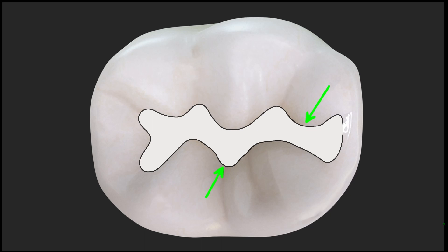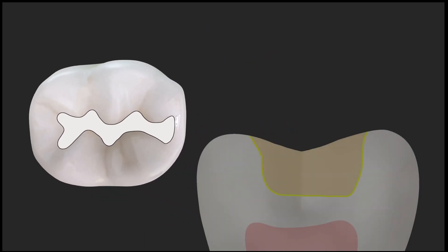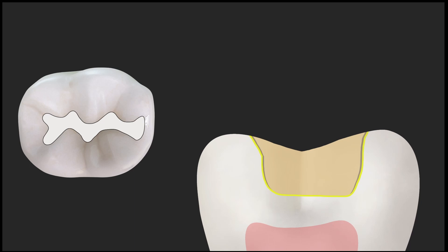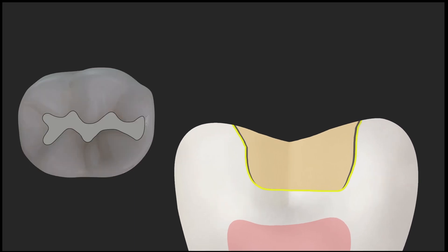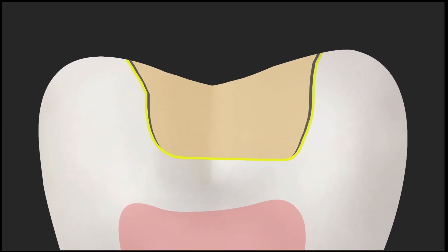In a cross-sectional view, we can see that there will be a gap formation between the tooth and the restoration once it is polymerized. This gap formation is the most important reason for sensitivity, because whenever there is something cold, there will be fluid seepage between the tooth and the restoration, leading to sensitivity. It can also lead to development of secondary caries, and fracture or dislodgement of the restoration.